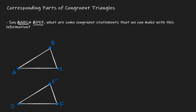What are some congruent statements that we can make knowing that we have two congruent triangles? We can start by looking at the order that we are stating the congruency statement. By the way we have stated this congruency statement, we're saying that segment AB is congruent to DE, BC is congruent to EF, and CA is congruent to FD.